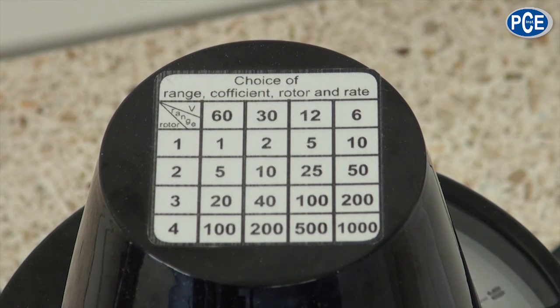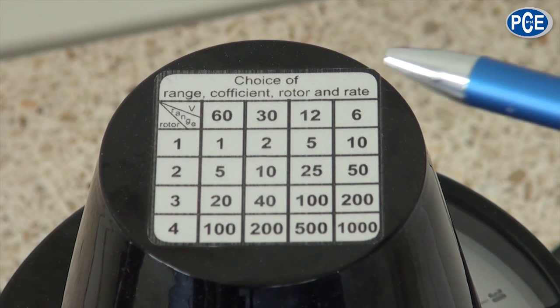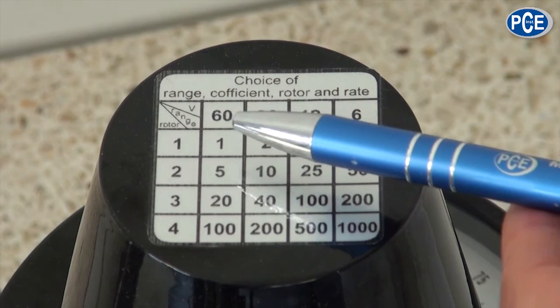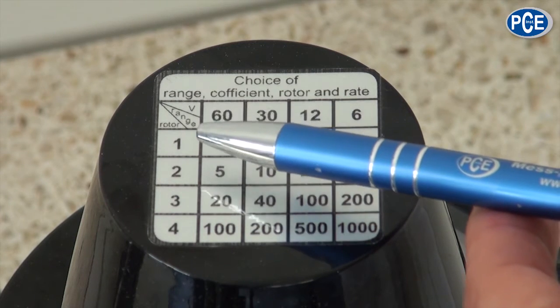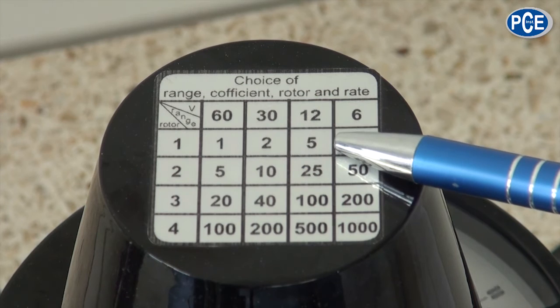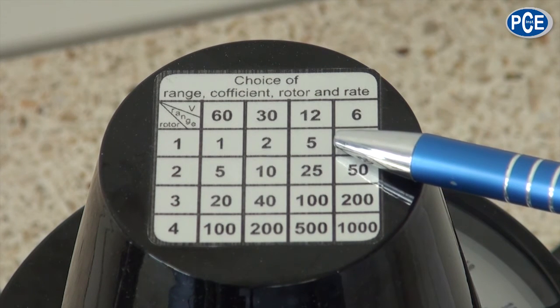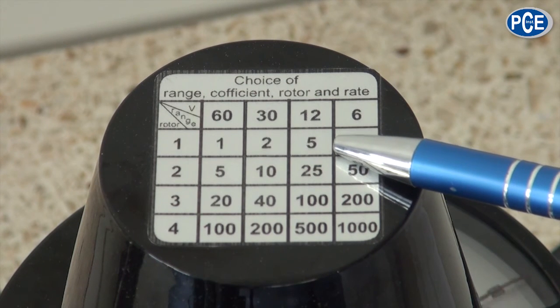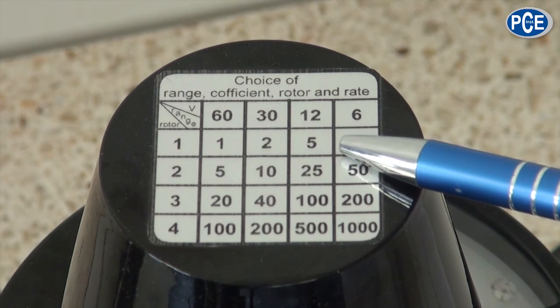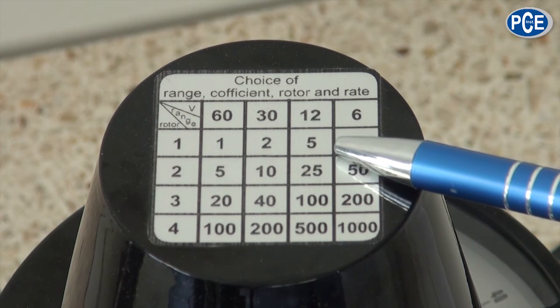To get out of the measured results the absolute measuring result, I need a constant. And with the help of the table I can find out the constant. We have here on the left 4 numbers, that are the numbers of the rotation bodies. Here we have the rotation size. One that is the biggest with a rotation speed of 12, that gives a conversion factor of 5. I have to multiply the measured result with 5 to find the absolute viscosity.